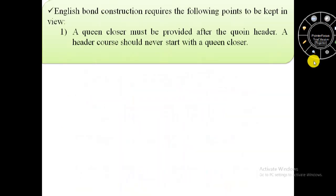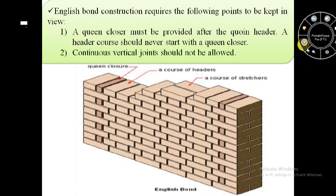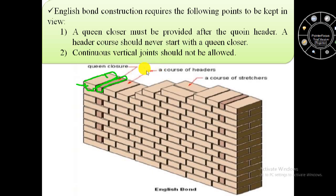English bond construction requires the following points to be kept in view. First, a queen closure must be provided after the coin header, and a header course should never start with a queen closure. In this image we can see this is the coin header, and after this coin header a queen closure is provided. Also, continuous vertical joints should not be allowed in English bond.